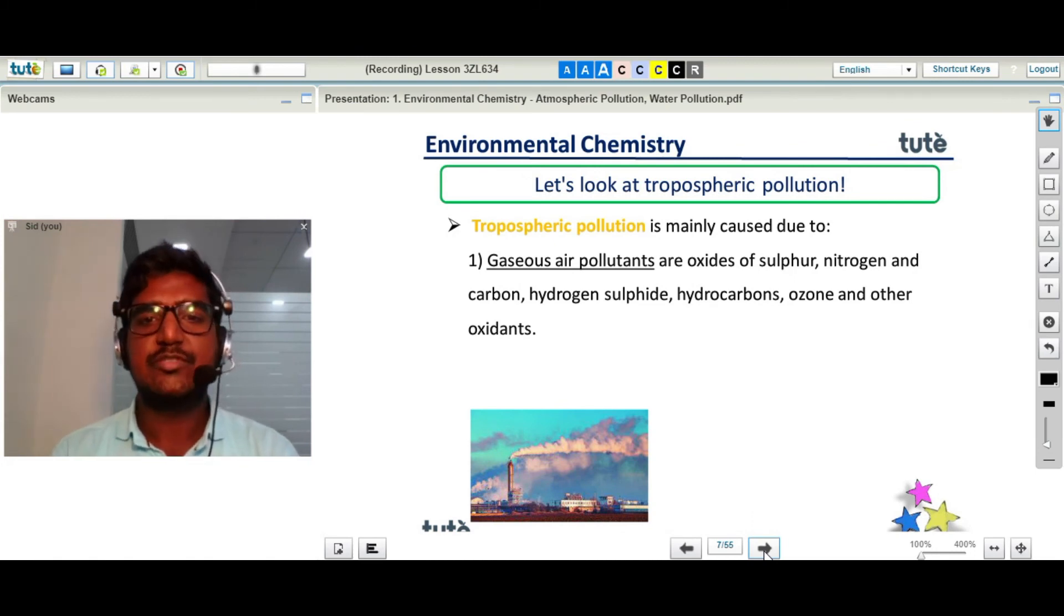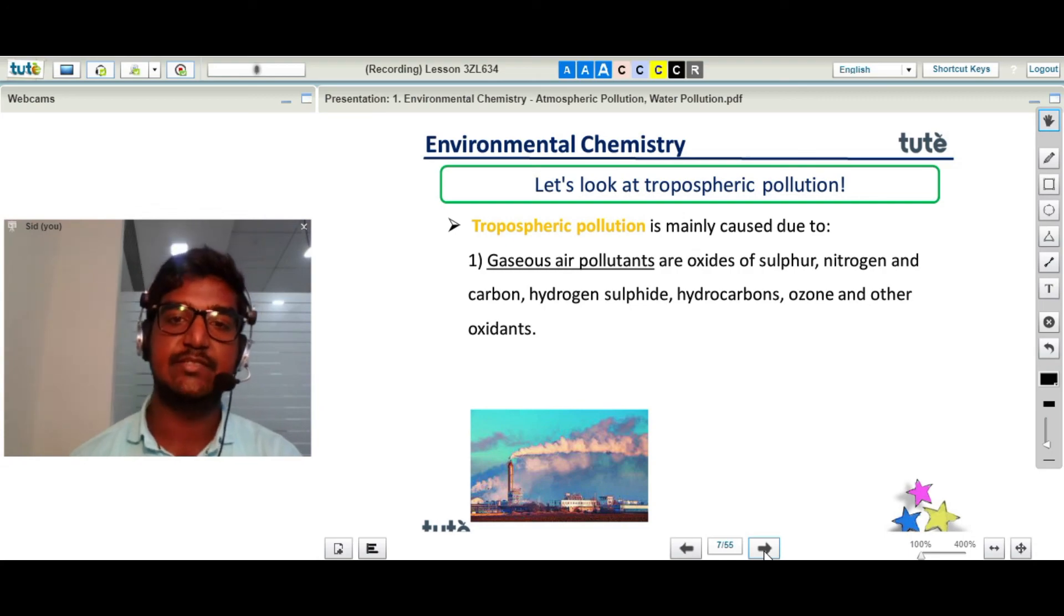For the troposphere, gaseous air pollutants include oxides of sulfur, nitrogen, and carbon, along with hydrogen sulfide (which you might get from rotten food, especially eggs), hydrocarbons, ozone, and other oxidants.